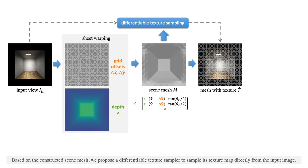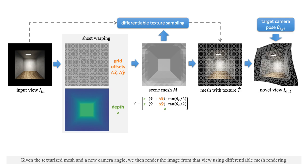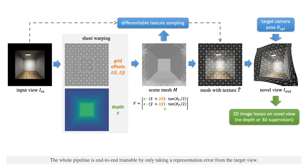Based on the constructed scene mesh, we propose a differentiable texture sampler to sample its texture map directly from the input image. Given the texturized mesh in the new camera angle, we then render the image from that view using differentiable mesh rendering.